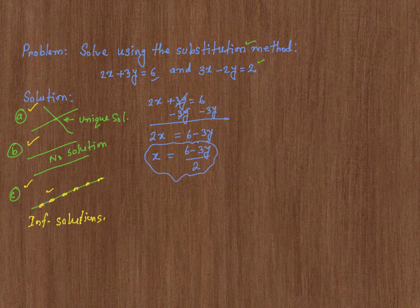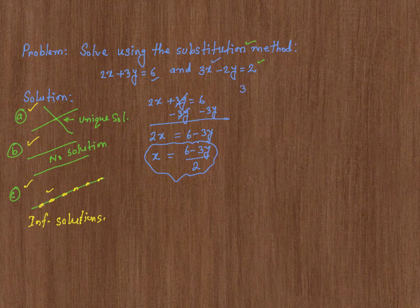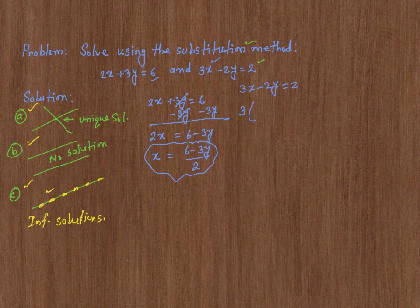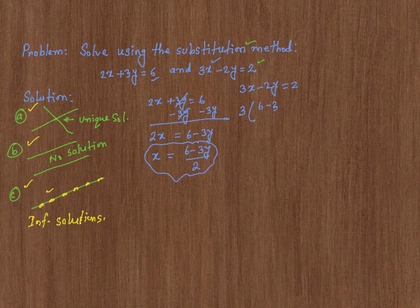Now, I will take this x value and plug it into this equation, which is 3x minus 2y equals 2. So 3 times x, x is 6 minus 3y over 2, that's my x, minus 2y is equal to 2.